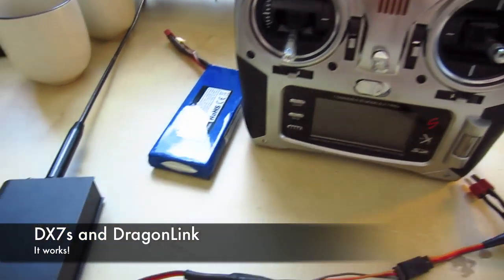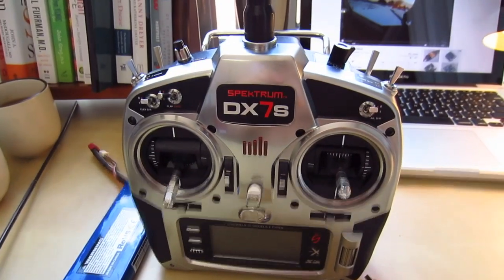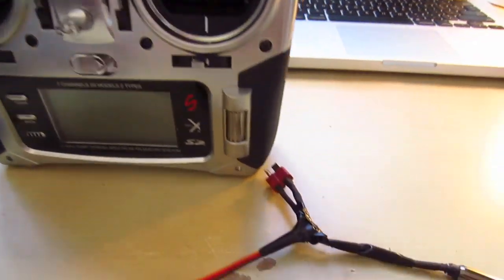Alright, this is how to wire up a Dragonlink UHF system to the Spectrum DX7S radio.